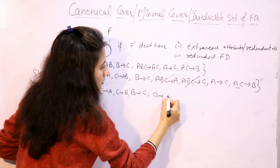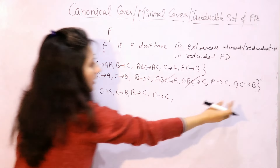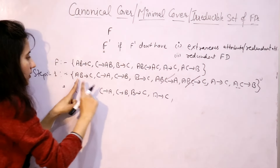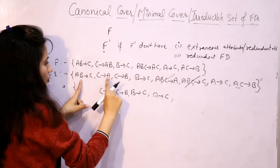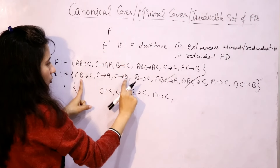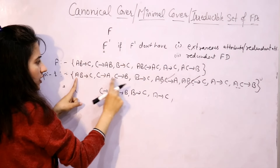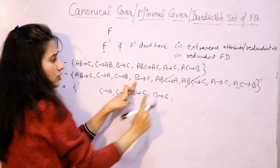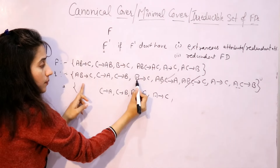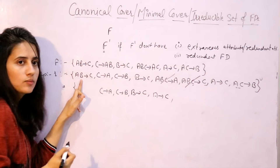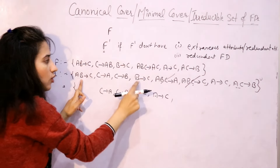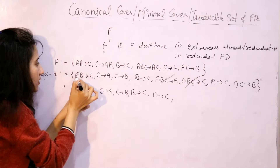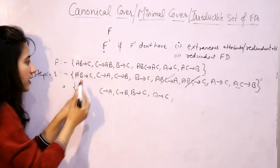Step two: remove extraneous attributes. We remove extra attributes from the left-hand side. Functional dependencies with single attributes on the left-hand side can be written directly. For AB → C, we check: B → C is given alone, so if alone B can do the task C, what's the use of hiring A? So A is extra, and remaining is B → C.